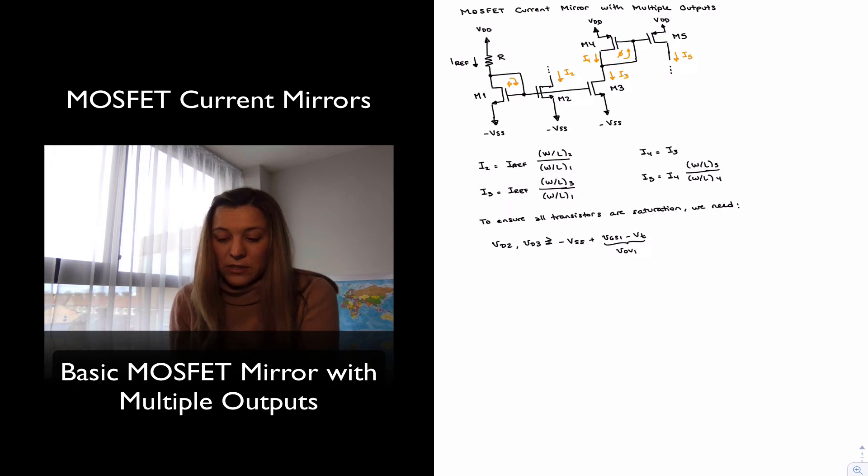That's just another way of stating that VDS must be greater than or equal to VGS minus VT. It's just that instead of saying VDS, we're saying VD, and we are referring it to the source voltage which is connected to minus VSS. But it's the same equation that we've seen so far.